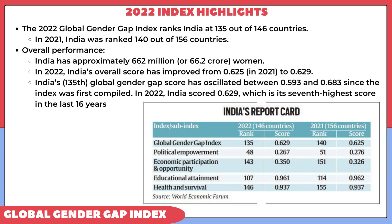If we talk about India in this year's gender gap index, our score has definitely improved. Previously the rank was 140, now it has become 135. In terms of score, in 2021 it was 0.625 and now it is 0.629. Globally we have reached 135th position. When the index was first compiled in 2006, India's score was 0.59, and in 2022 we have reached a score of 0.629. In the last 16 years, 0.629 is the 7th highest score India has achieved.